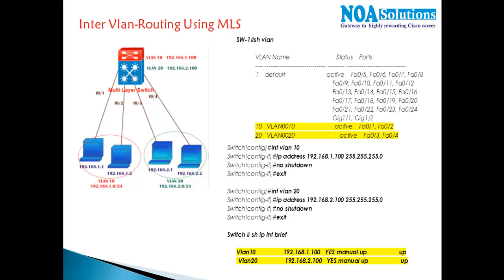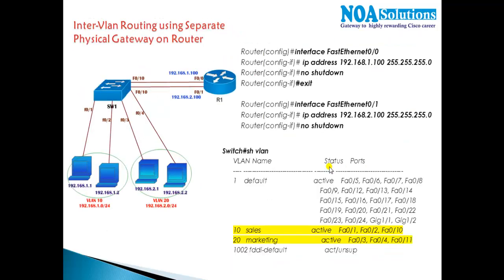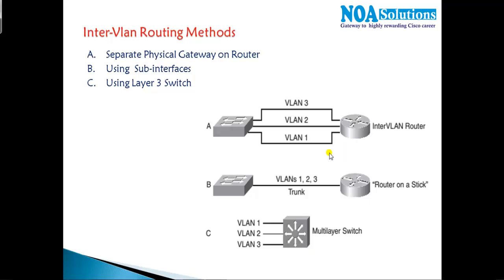In this section we'll see inter-VLAN routing using a multi-layer switch — the 3550 or 3560. Going back to previous concepts, we saw inter-VLAN routing using a separate physical interface or separate physical gateway. This is not really applicable in today's networks because having a separate gateway for each and every VLAN is not scalable.